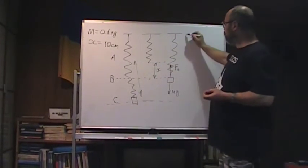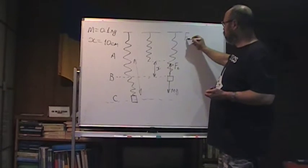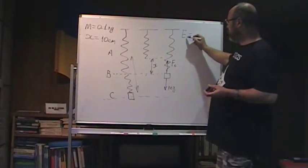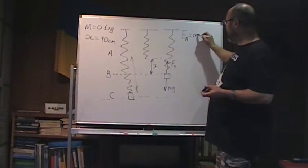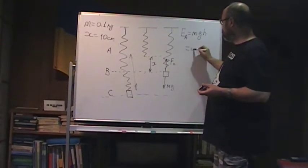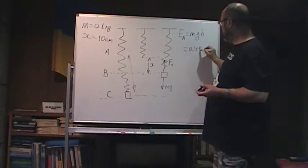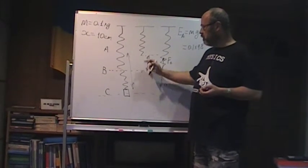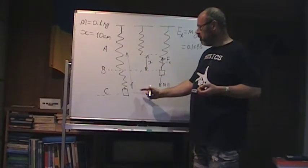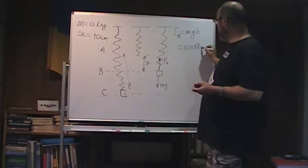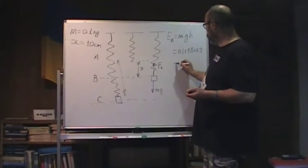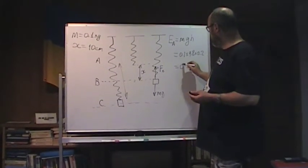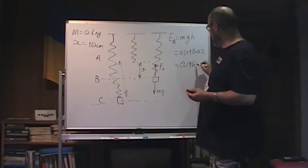So we will have that initial total energy will be equal just gravitational potential energy Mgh. So it's equal to 0.1 times 9.8. And the height is, as this is 10 cm, then this will be another 10, so total 20 cm times 0.2. So it will be equal to 0.196 J.